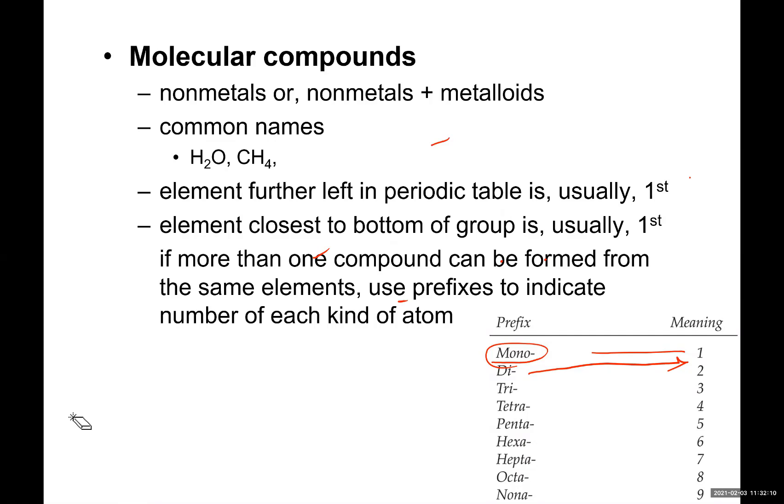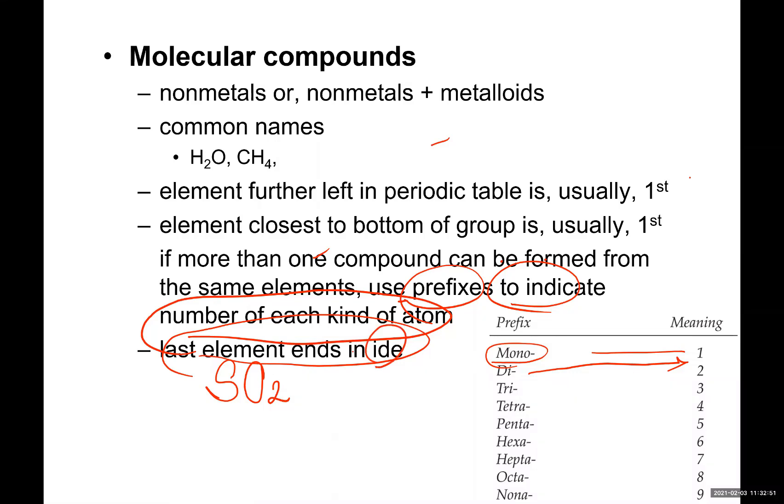So we are using mono, di, tri, tetra as a prefix to indicate number of atoms, number of the same atoms being repeated. For example, did you notice when I was naming sulfur dioxide, I said sulfur dioxide, I don't say sulfur dioxygen. So the last atom, the name is going to be taking -ide. Sulfur di, not oxygen but oxide. -Ide added to the ending of this element which is coming next.